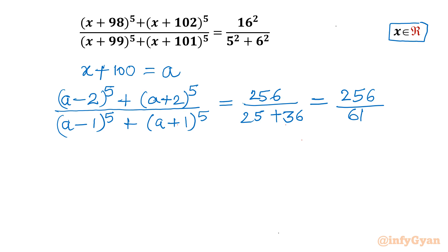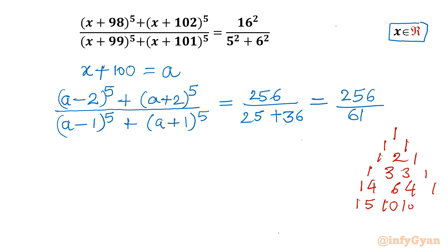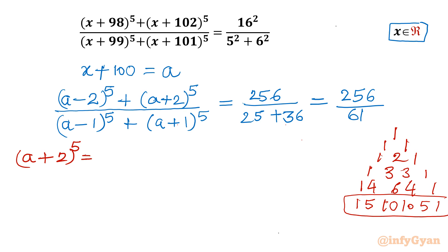I will write the coefficients for power 5 using Pascal's triangle: 1, 5, 10, 10, 5, 1. Now let's write our expansion. I will write (a+2)^5 first, then consider the sign for (a−2)^5, and similarly (a+1)^5 and (a−1)^5.